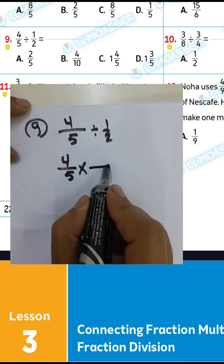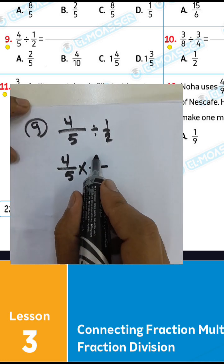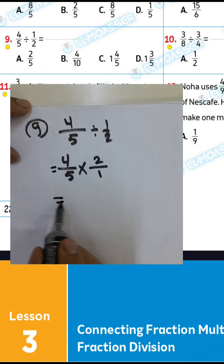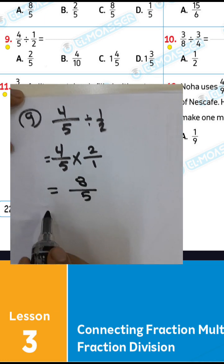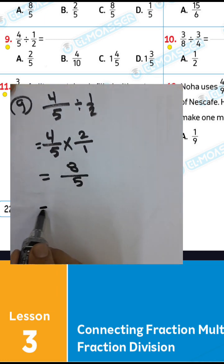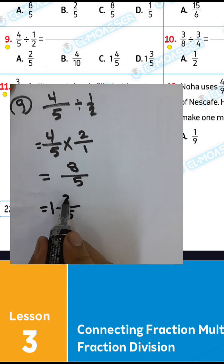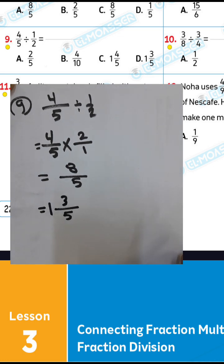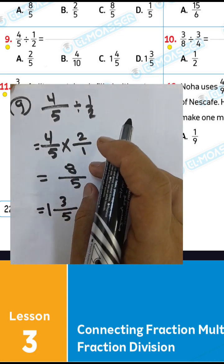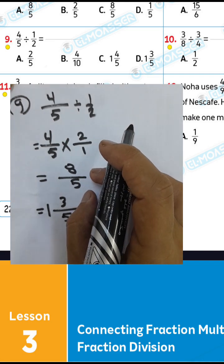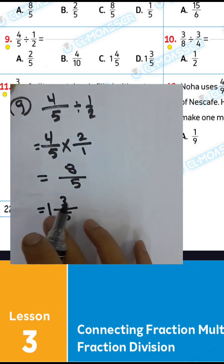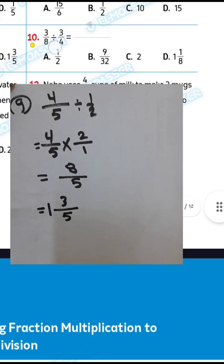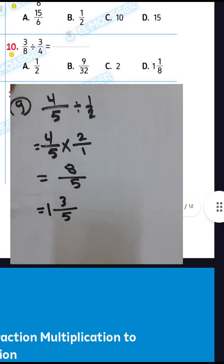Question number 9: 4/5 divided by 1/2. You can write 4/5, convert from division to multiplication, and write the inverse of 1/2, which is 2 over 1. So 2 times 4 equals 8, and 1 times 5 equals 5, giving 8/5. Since it's an improper fraction, you can convert to a mixed number: 8 divided by 5 equals 1 with remainder 3, so the answer is 1 and 3/5.